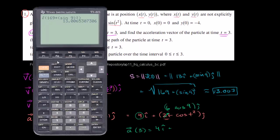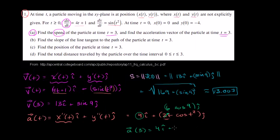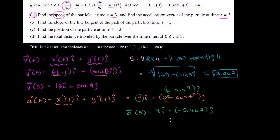Using the calculator, 6 times cosine of 9 is negative 5.467. So the acceleration vector at time 3 is 4i plus negative 5.467j. You could also write it in ordered pair notation as the vector (4, negative 5.467). Both notations specify the same thing — 4 is the x component of the vector and negative 5.467 is the y component of the vector.